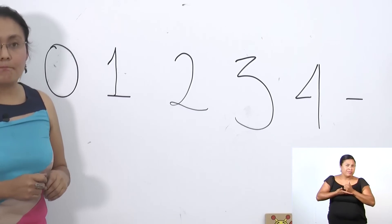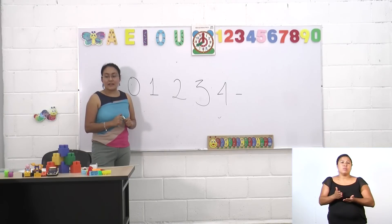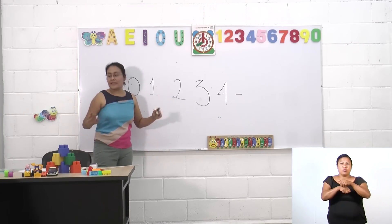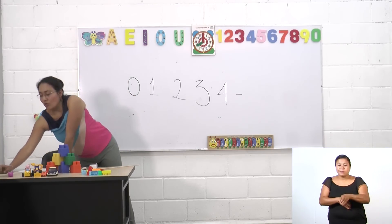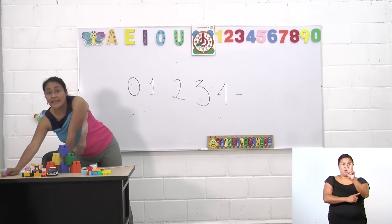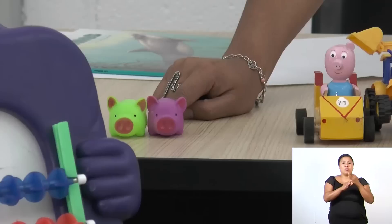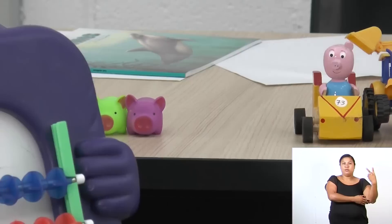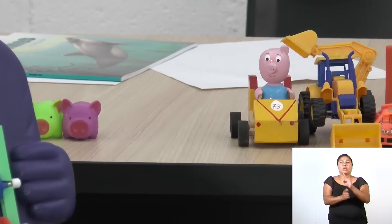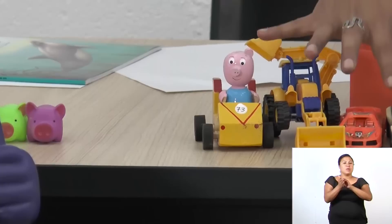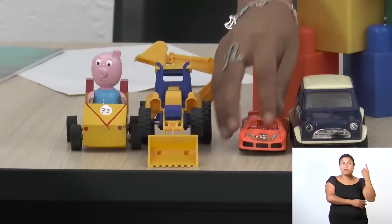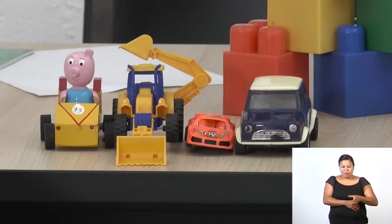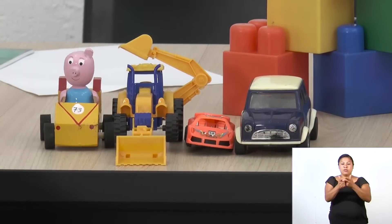Vamos a checarlo. Te propongo que con el número dos, con tus juguetes, pudieras formar una colección de dos elementos: dos cerditos, uno, dos. También podríamos formar la colección de cuatro elementos como la de los carritos que están aquí: una, dos, tres, cuatro. Cuatro carritos. Formamos una colección de cuatro elementos.